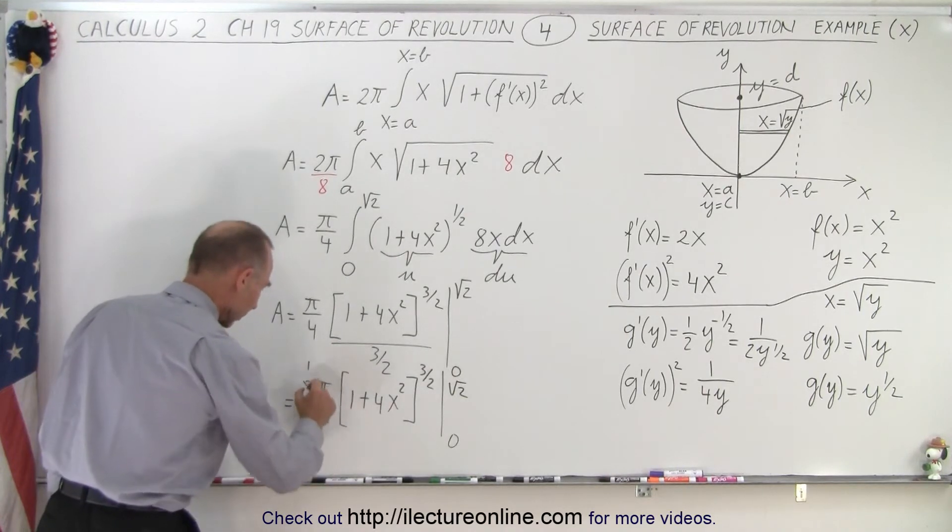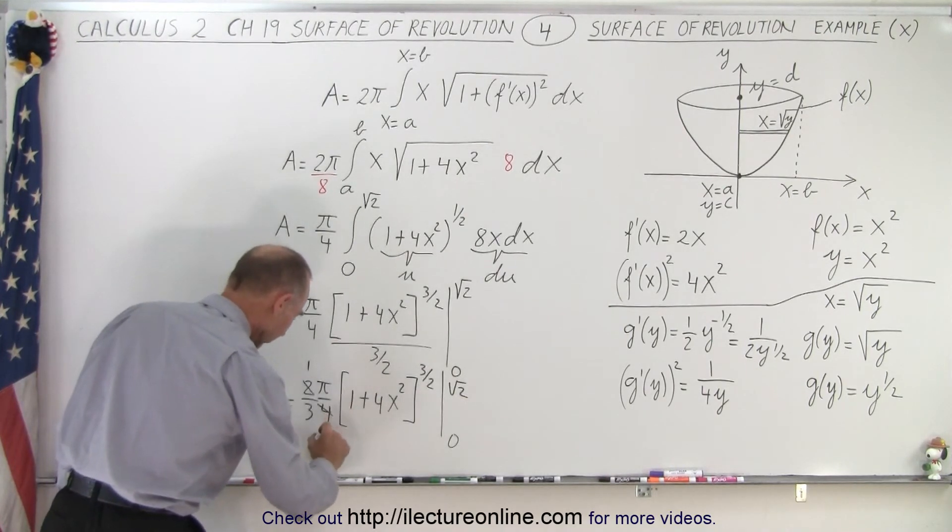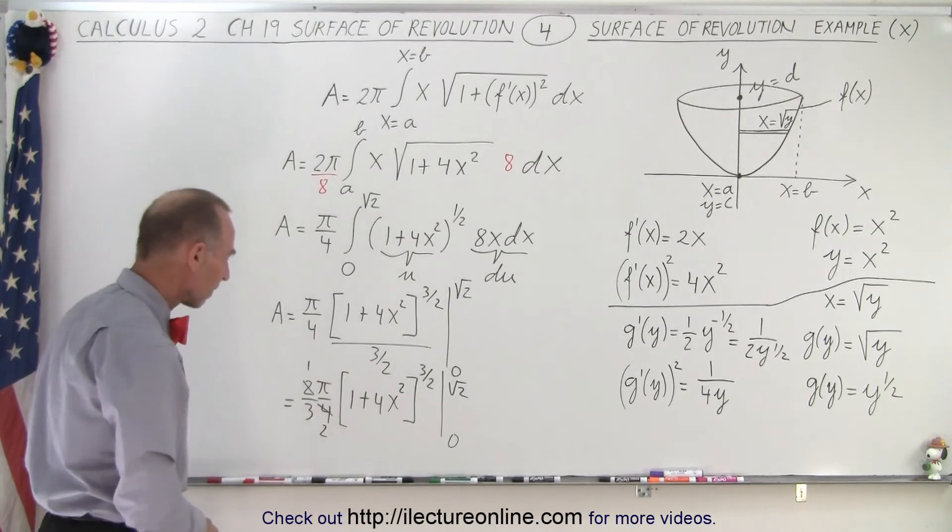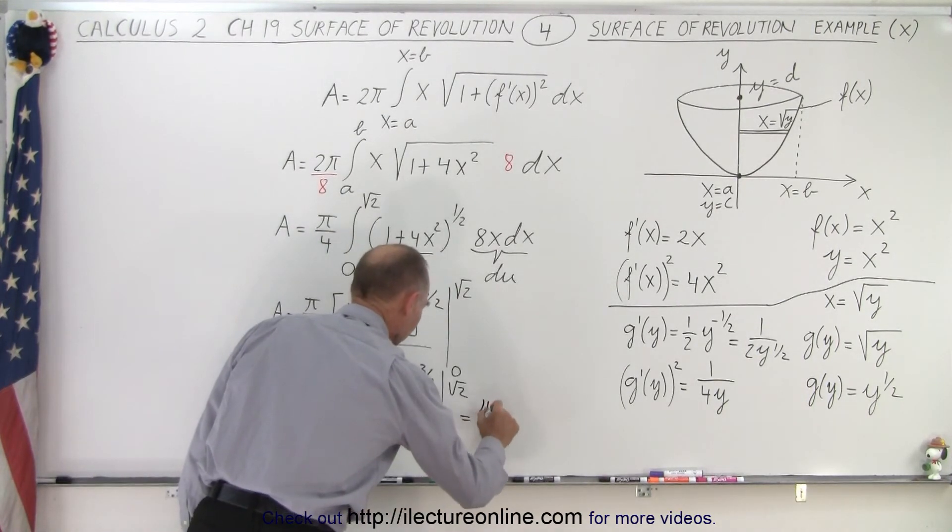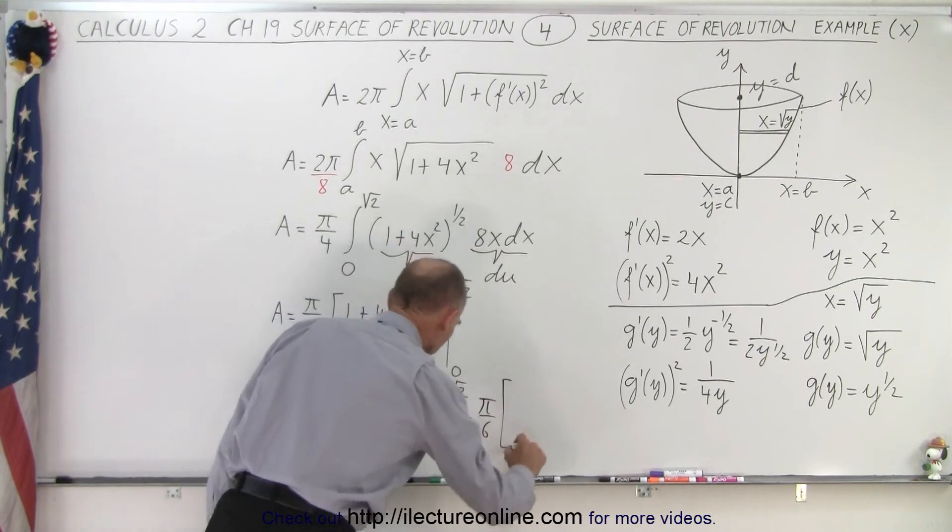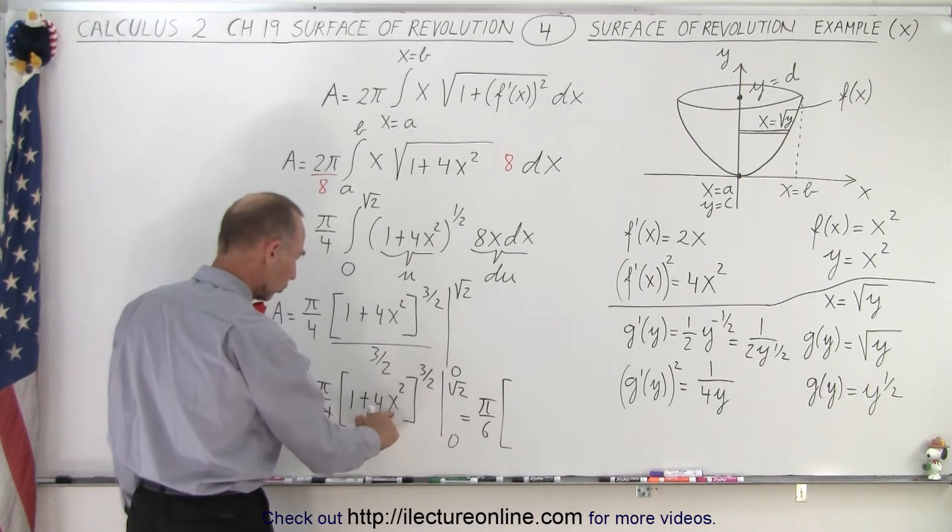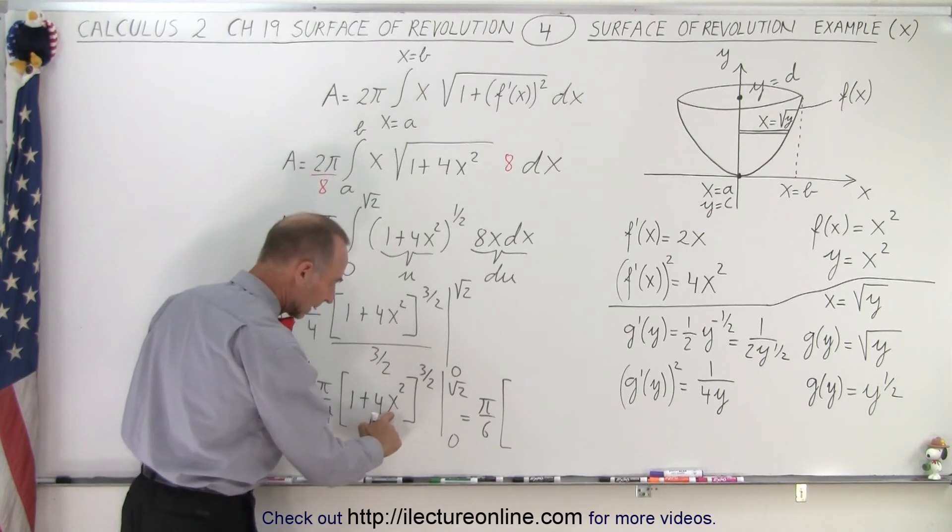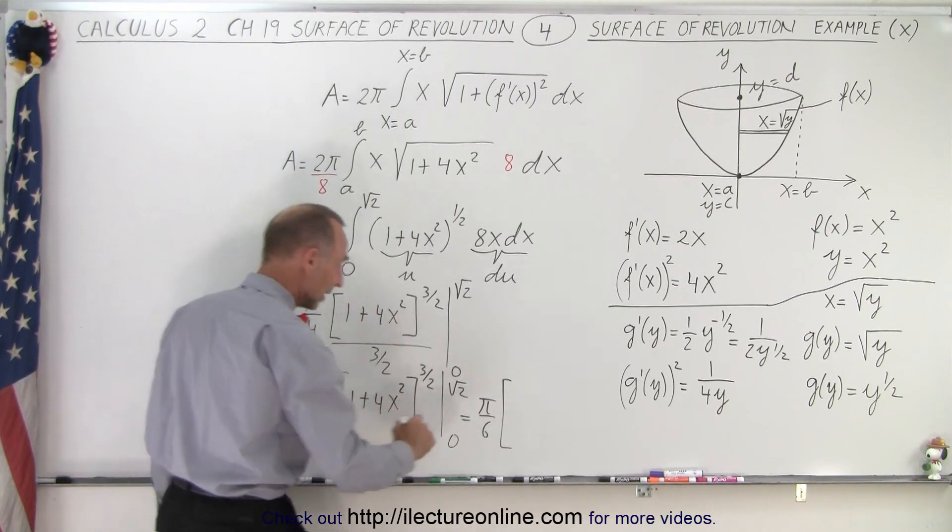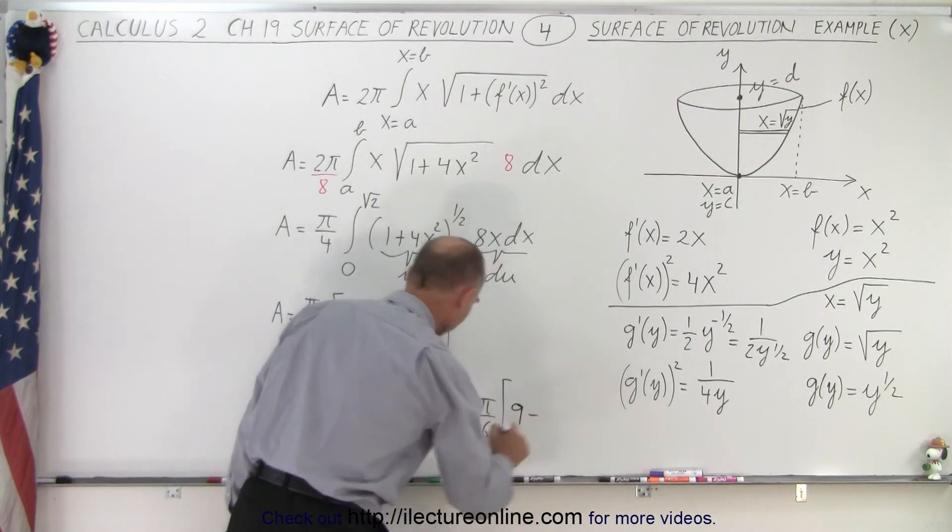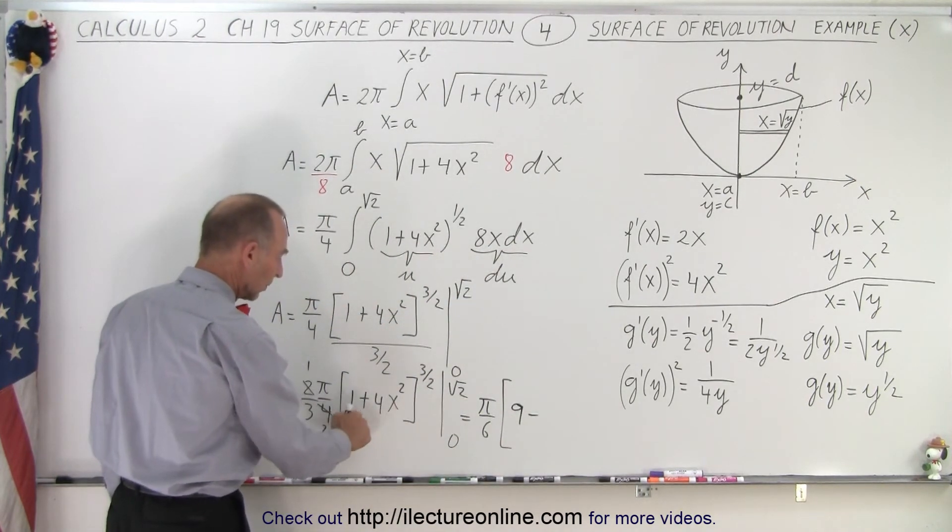So this is going to be equal to 2/3 times π over 4 times the quantity 1 plus 4x squared to the 3/2 power, evaluated from 0 to the square root of 2. All right, this can be simplified. The 2 and the 4 cancel, so we end up with π over 6. And now what do we get inside here? So that gives us π over 6 times, when we plug in the upper limit square root of 2, so square root of 2 squared, that would be 2, 2 times 4 is 8 plus 1 is 9. So we end up with 9 minus when we plug in the lower limit, we simply get 1.